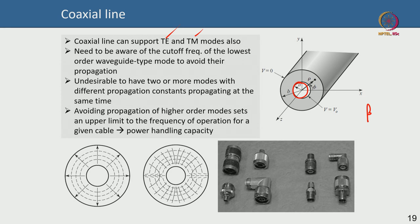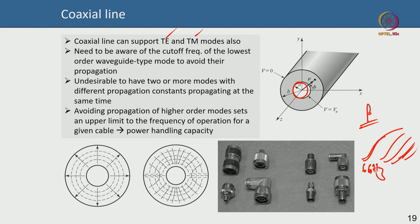You also do not want multiple modes with different propagation constants beta to propagate at the same time, because it can create undesirable effects. So if higher order modes come in at say 10, 15, or 20 GHz, you put an upper frequency limit. In this example, the cable operates from 6 to 20 GHz, which also puts a limit on power handling capability. Various coaxial connectors each have a specific frequency range over which they are useful.